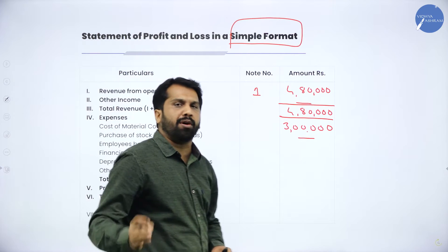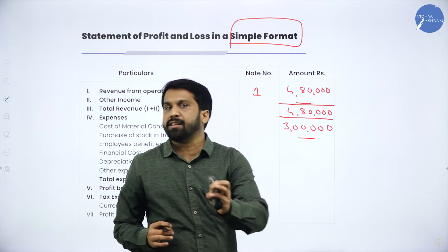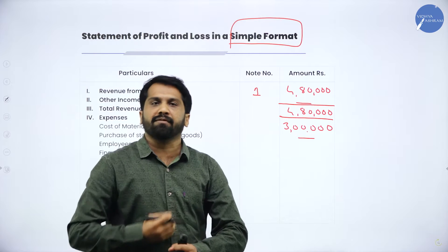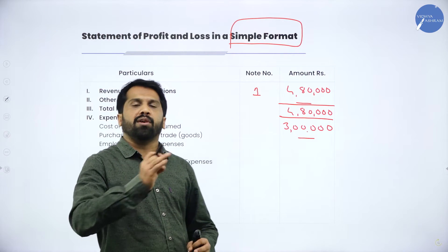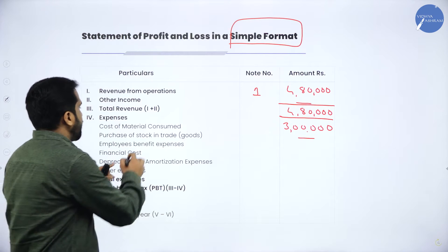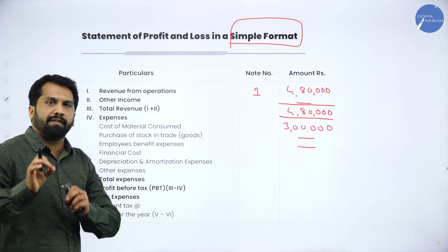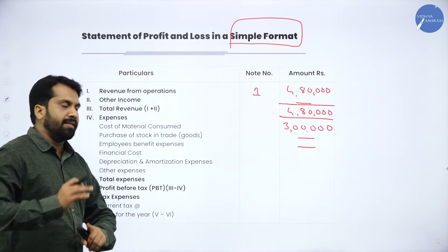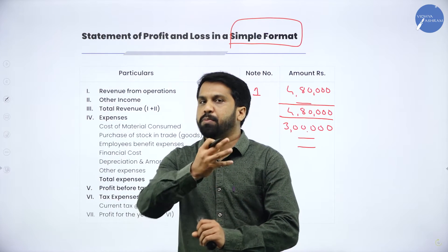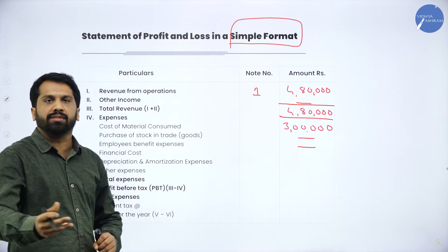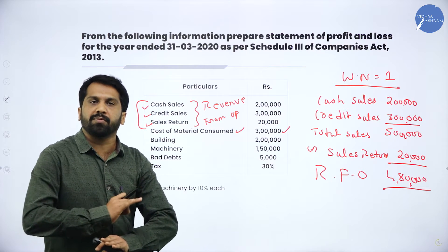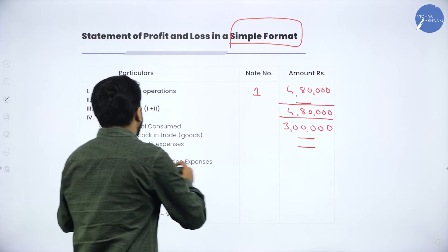Employee Benefit Expenses — salary, bonus, provident fund, pension, all benefits to employees come under this. In this problem employee benefit expenses are not given, so write nil. Every problem, whether the item is present or not, you should write all line items. Next, Financial Cost — interest paid, interest on debentures, interest on loans all come under financial expenses. Not given in this question, so Financial Cost is nil.